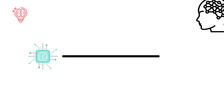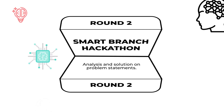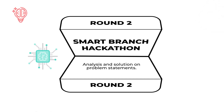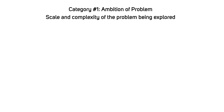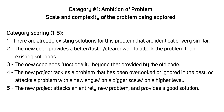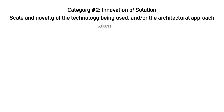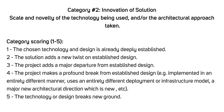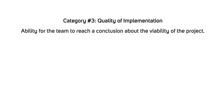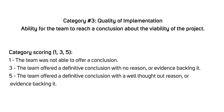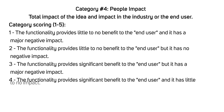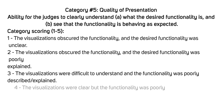Round 2 is the Smart Branch Hackathon. A problem-analyzing and solution-designing round will be conducted to test the ability of students to provide technical solutions to real-life problems. The solution will be evaluated under the categories of ambition of problem, innovation of solution, quality of implementation, people impact, and quality of presentation.